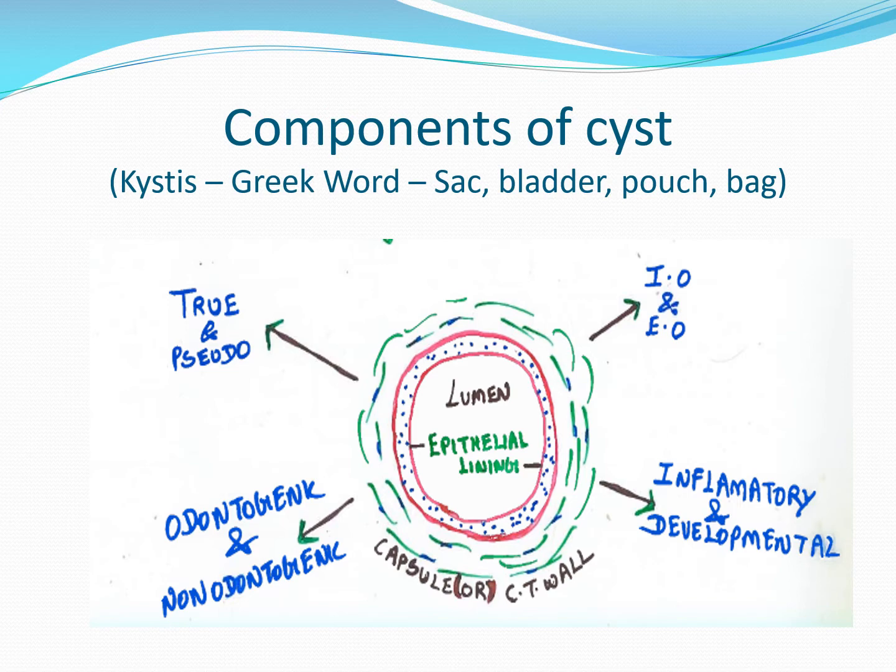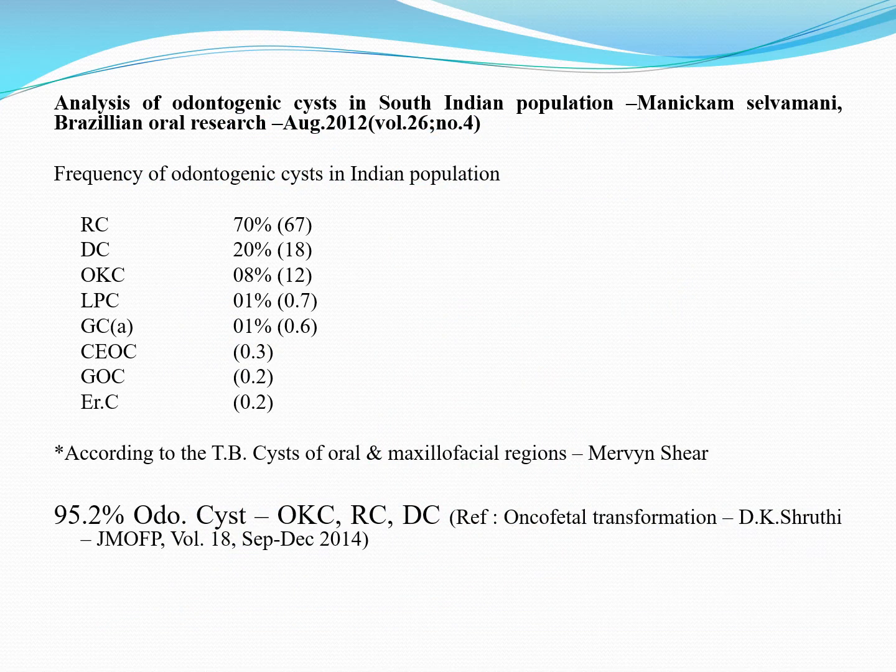Statistical analysis from a South Indian population study shows that, wherever the study is done, the radicular cyst tops the list as the most common cyst. The radicular cyst is most common in the maxillary anterior region — particularly maxillary central incisors — most commonly due to trauma.